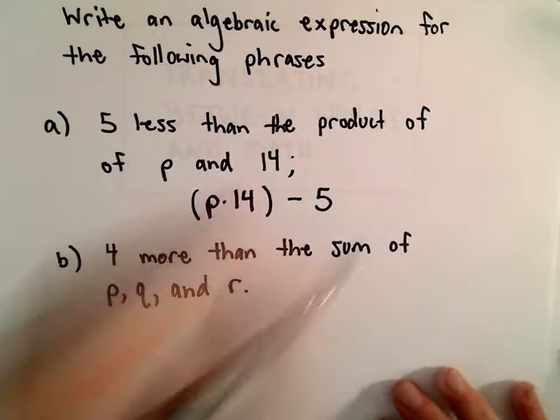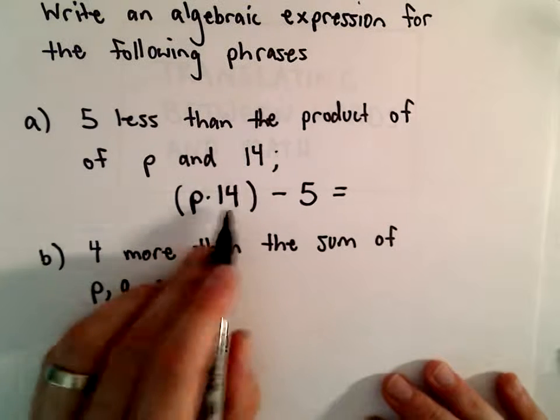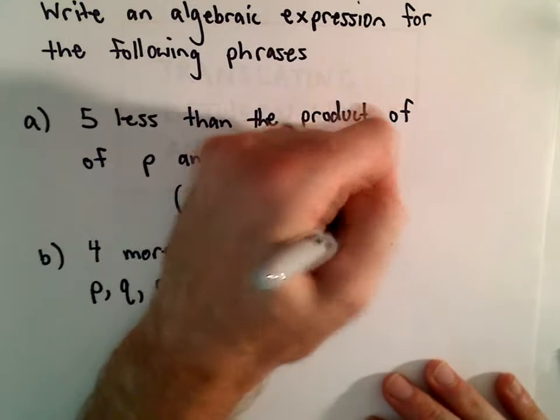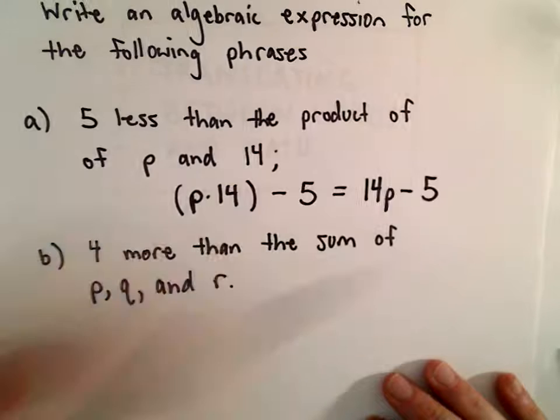So that would be one way of writing it. Probably the more common way, we tend to put our numbers in front of our variables, so we could say 14P minus 5.